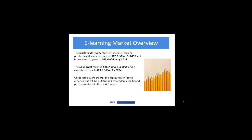Corporate buyers are still the top buyers in North America, but the academic buyer — both K-12 and post-secondary — will surpass that in the next five years. That's the prediction, and certainly when you look at the numbers with online learning in K-12 and higher ed, you can understand why. There's also a boom in global demand for courses offered by for-profit international education providers. People want that instantly — if they need knowledge and accreditation, they're looking for where they can get it quickly.